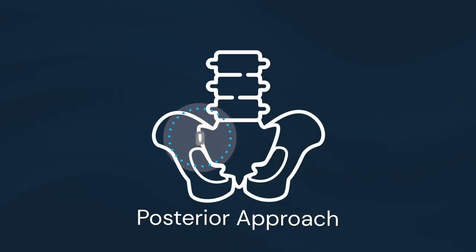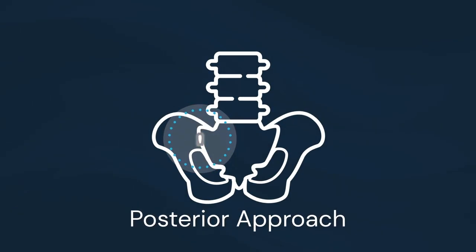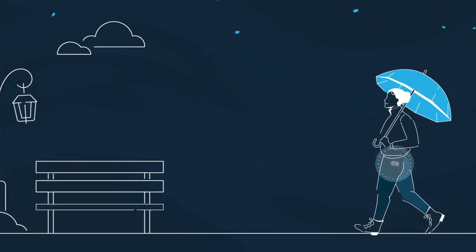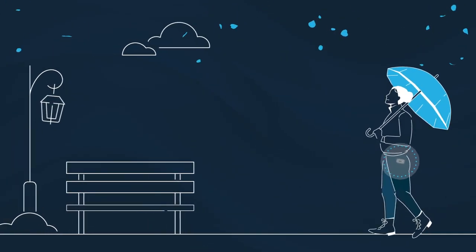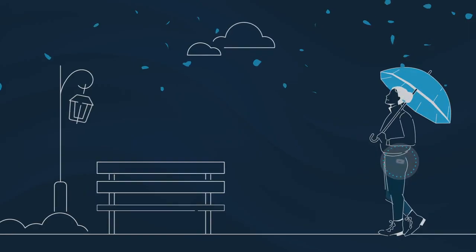It is placed into the sacroiliac joint from the back using a small incision. The short four-step procedure leads to a faster recovery compared to screws or rods placed laterally across the joint.